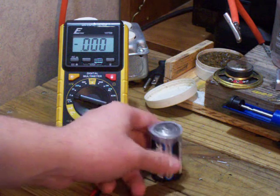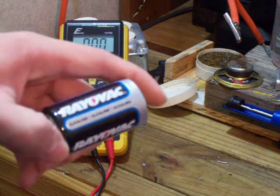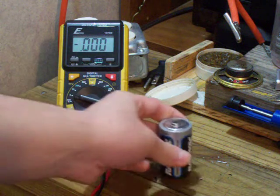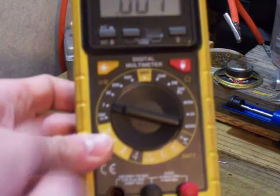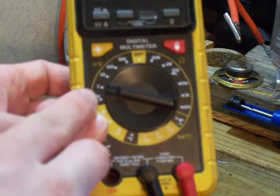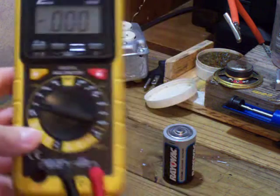For this example I'll be using a regular D size battery and an E-Tech multimeter. I have it set at the 2 volt setting since the D battery is 1.5 volts.